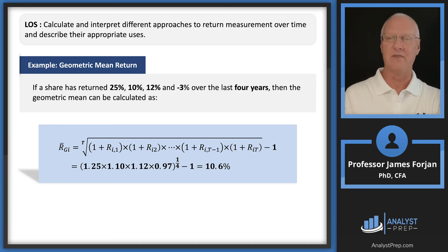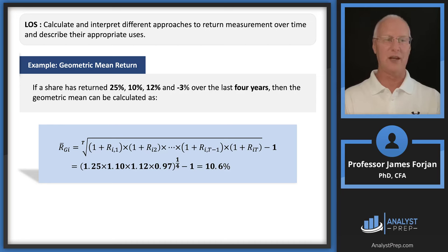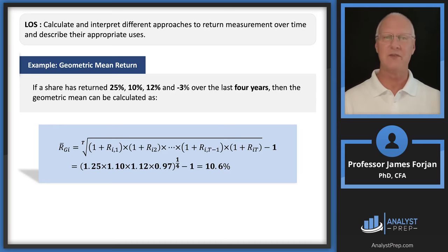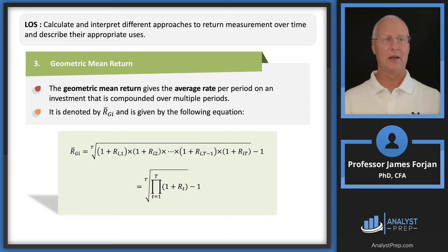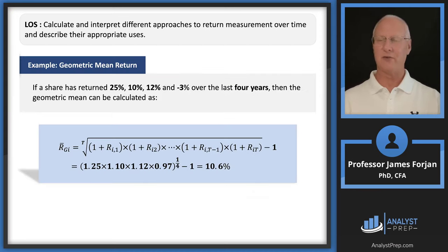Going back to the earlier example: 100% gain (1 + 1.00 = 2.0) times 50% loss (1 − 0.50 = 0.5) gives 2.0 × 0.5 = 1.0. Raise 1.0 to the one-half power, you get 1. Subtract one, you get a 0% geometric return. So my arithmetic return was 25%, but my geometric return was 0% — which makes perfect sense. The arithmetic return was 25%; the geometric return was 0%.